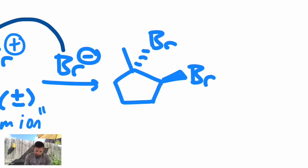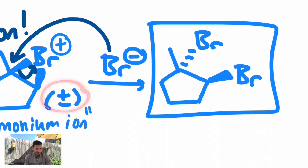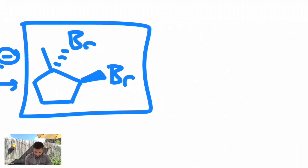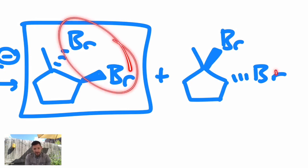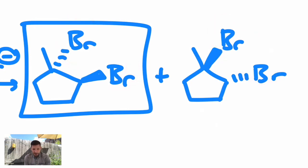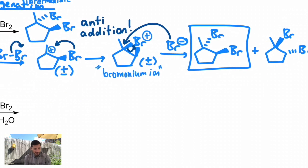That's our product. But what about it being racemic? You also get the enantiomer. It's still anti. There's no diastereomer formed. It's stereoselective for anti-addition because of that bromonium ion. It turns out that's not the only reaction that involves anti-addition.